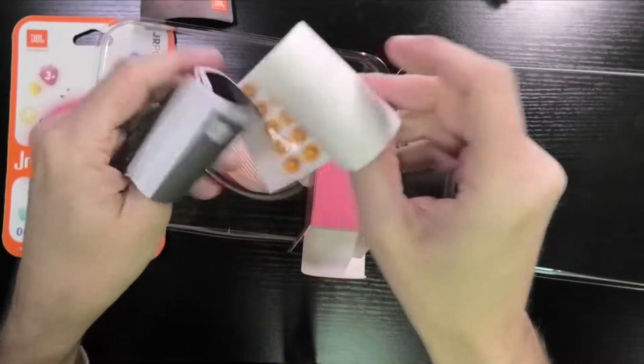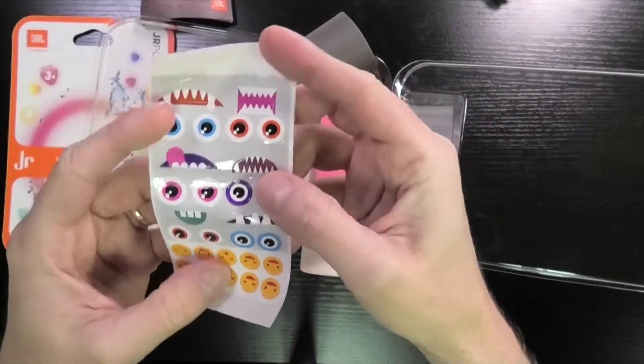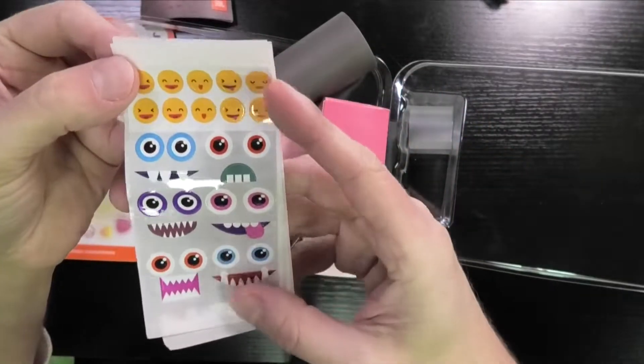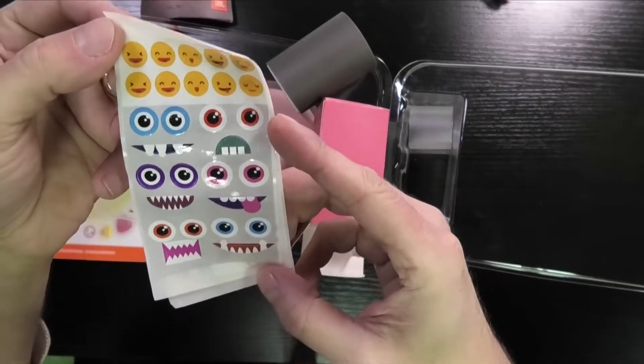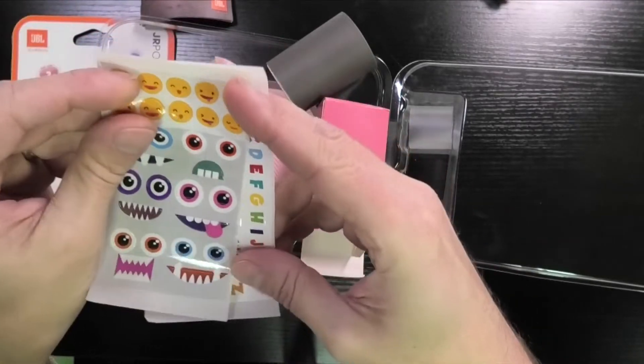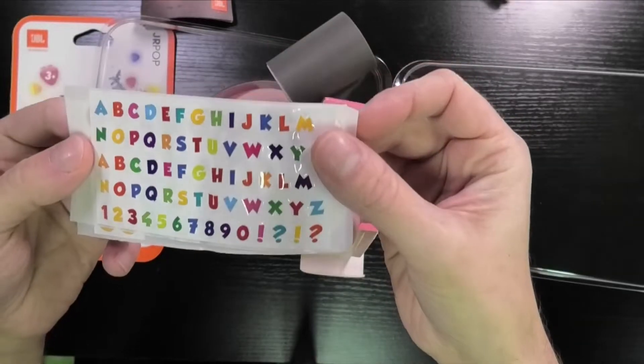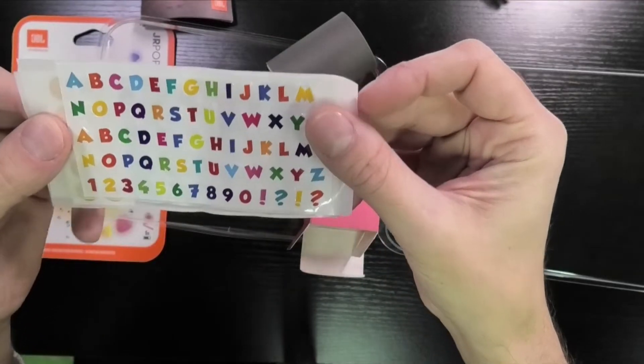So we have here the stickers as it said on the package. You can see kinds of smiley faces, emojis, and some funny and scary faces. And then here on the second strip, the alphabet and some numbers.